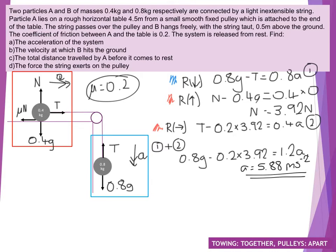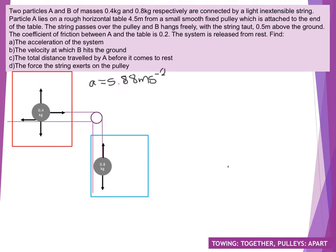Now we're going to look at part B, which asks for the final velocity at which B hits the ground. So we're going to have to use information about how far B is going — that's going to be our displacement. We've got an acceleration value. Looking at the question, we've got the 'from rest' term, so we've got initial velocity. We should have enough to do our SUVAT calculations. So for part B, we're writing out our potential SUVAT values: S, U, V, A and T.